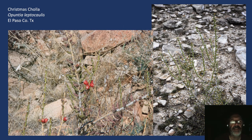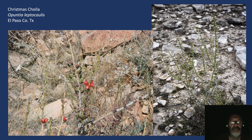Then the Christmas cholla, Opuntia leptocaulis — a fairly low-growing, slender plant. My introduction to this was doing a survey for threatened and endangered plants down in the Sanderson area. There, the Texas sage is a very common plant, and these chollas grow up in the Texas sage, so you frequently find them by running into them. Called Christmas cholla because of the fruit looking like Christmas ornaments. Fairly common, not a rare plant.